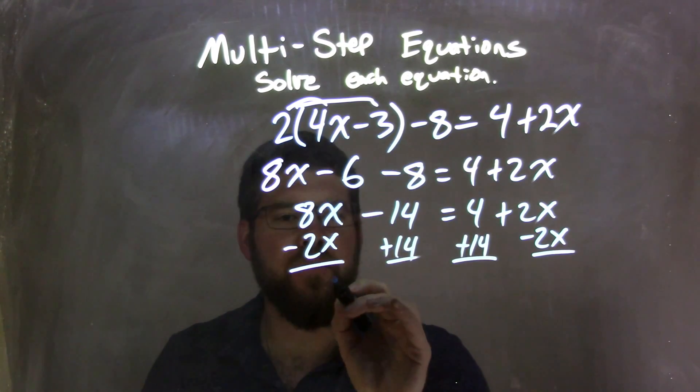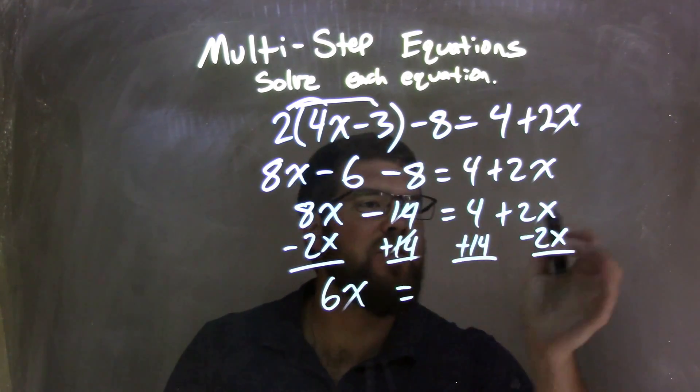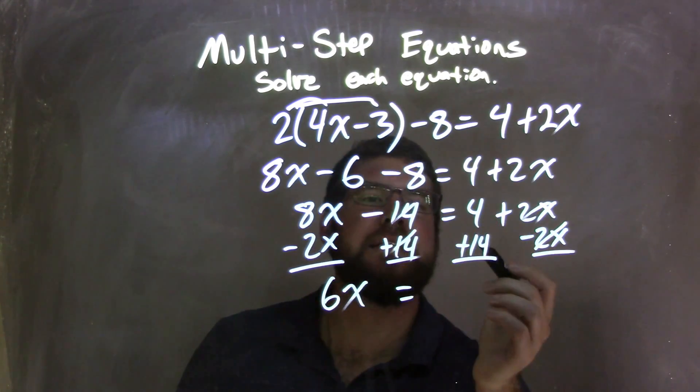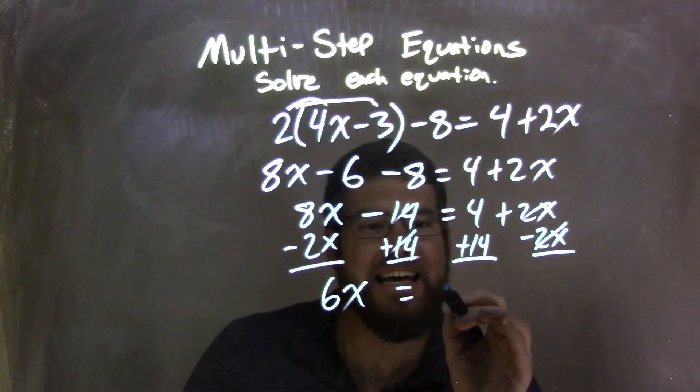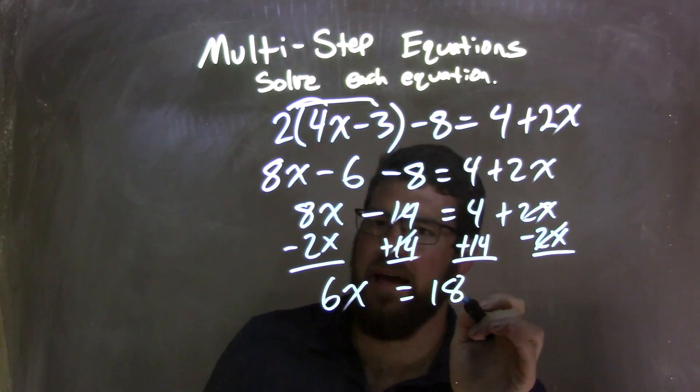8x minus 2x is just a 6x, equals, well, the 14s cancel, the 2xs cancel, 4 plus 14 is 18. So now I have 6x equals 18.